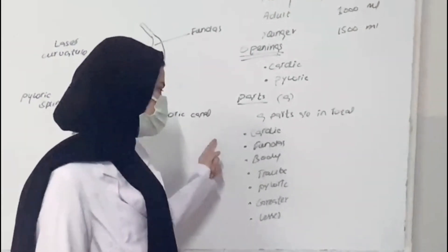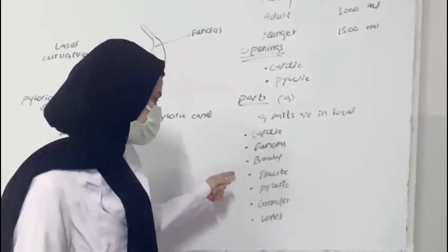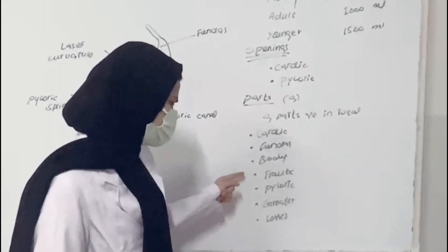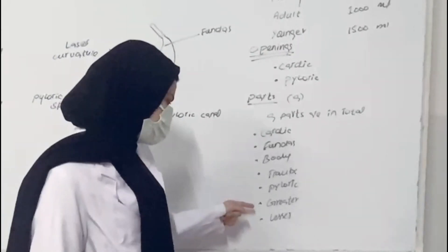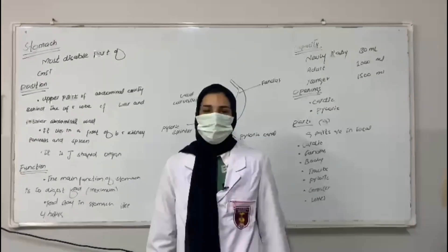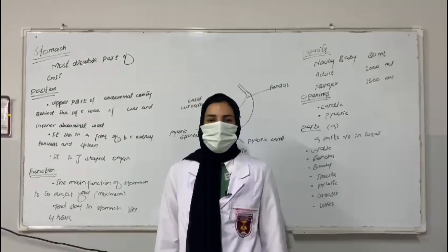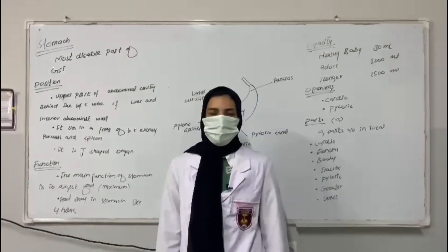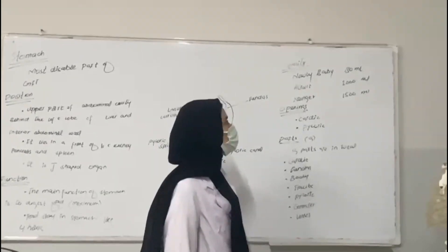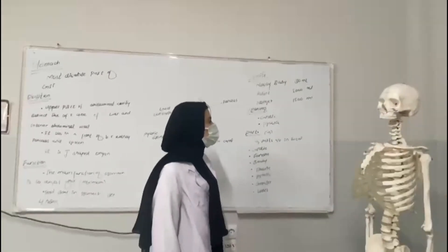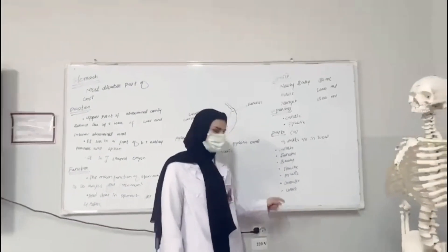This diagram shows the parts of the stomach: this is the cardiac region, this is the fundus, this is the body, this is the greater curvature, this is the pyloric region, and this is the pyloric sphincter. The capacity of the stomach — newborn: 30 ml; adult: 1,000 ml. Thank you.